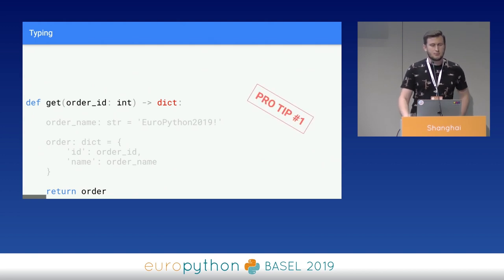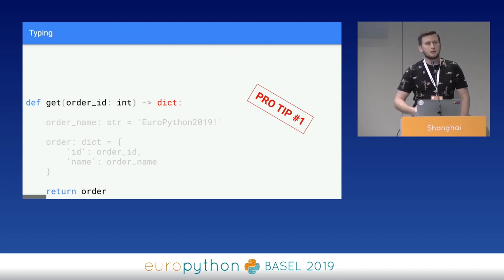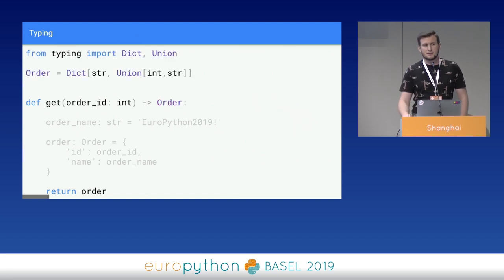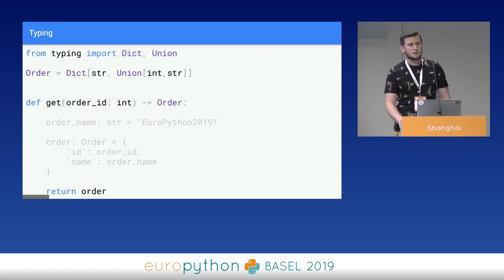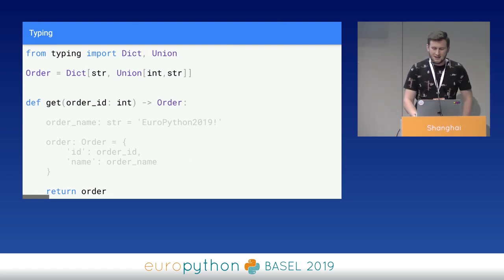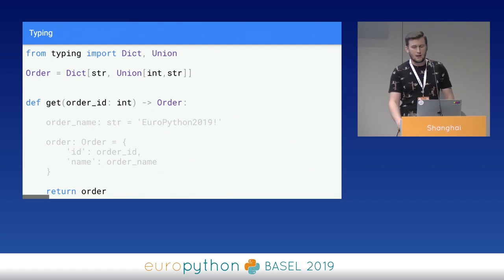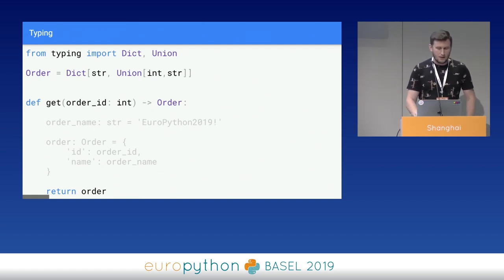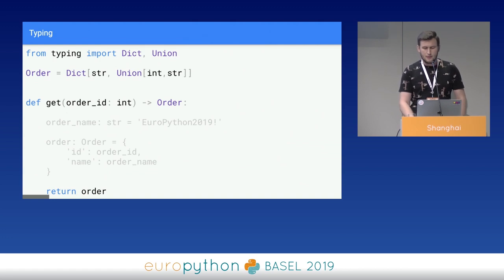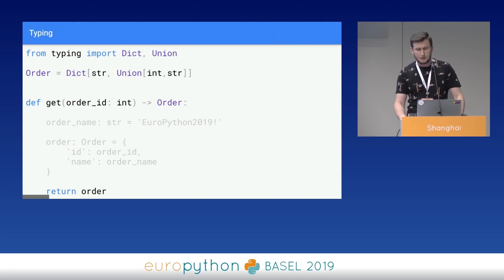This is pro tip number one: with typing, be precise. Don't use too general type annotations. How? For example, with aliases. Here you can see an order alias, which is a dictionary of string keys and string or integer values. We can use it as a return type of our function. What is most important for me is that we know what is inside this dictionary — an order.